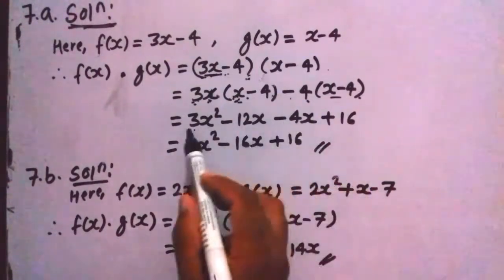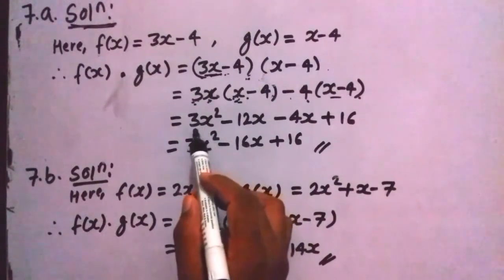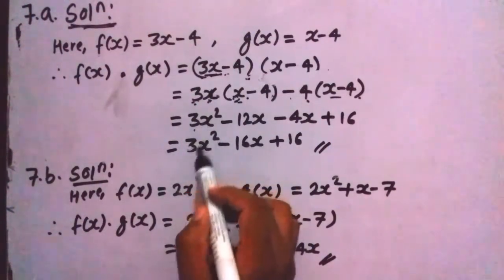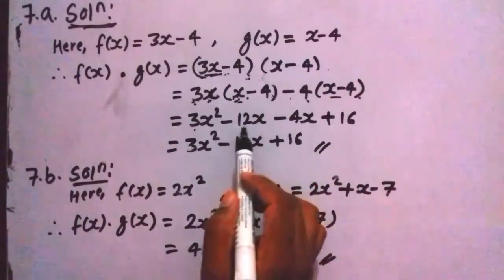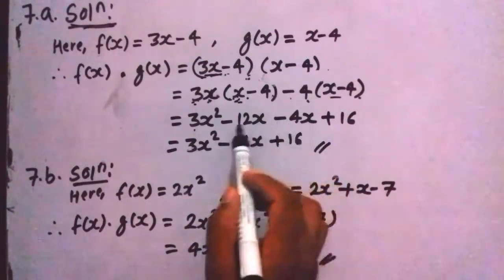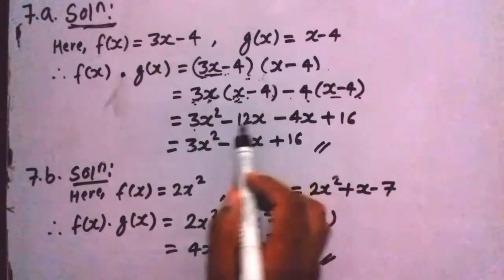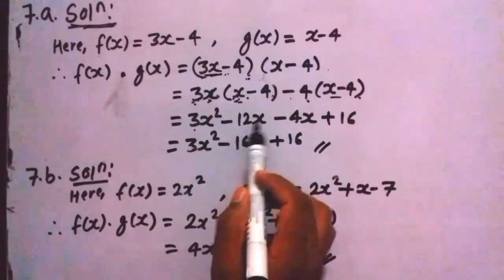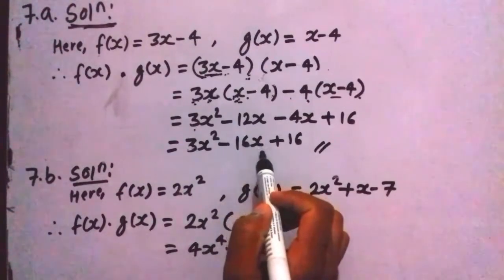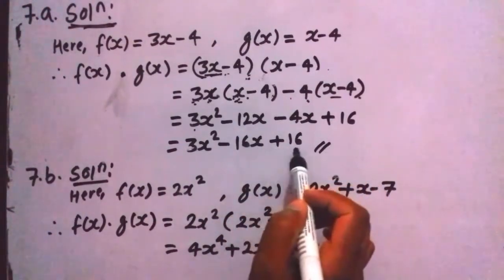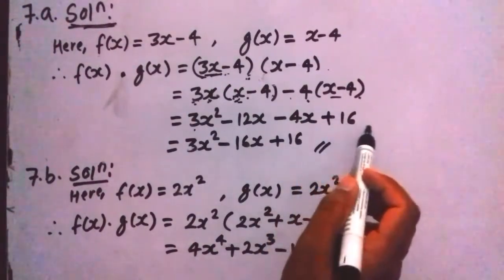Here we have to add or subtract the like terms. The only term containing x squared is written as it is. The terms containing x need to be added or subtracted — since both contain a minus sign, we add and the sign is minus. So minus 12x plus minus 4x gives minus 16x, then plus 16 is written as it is because there is no other constant term.